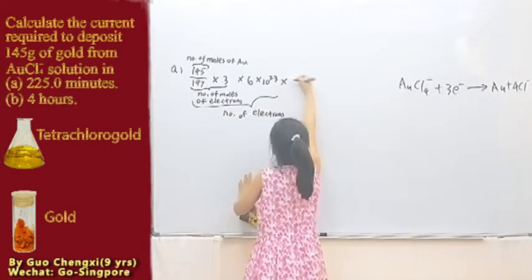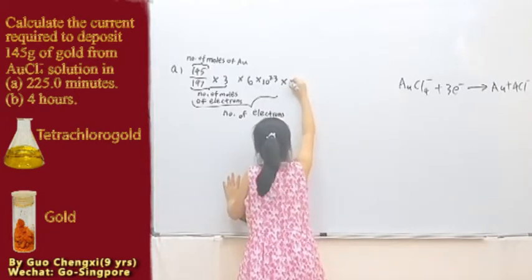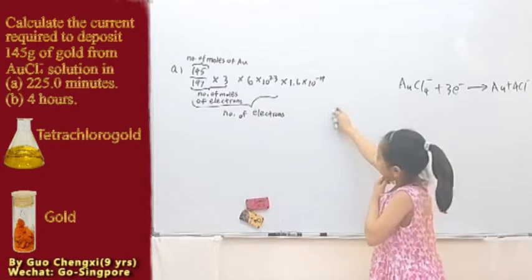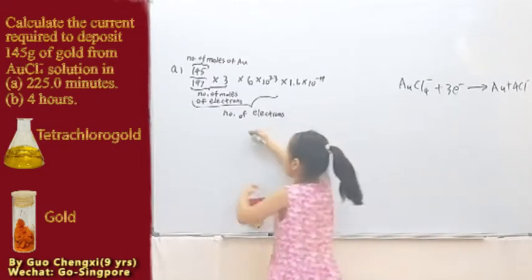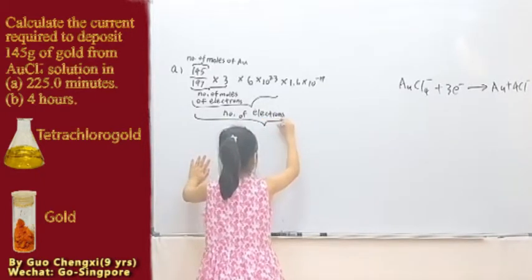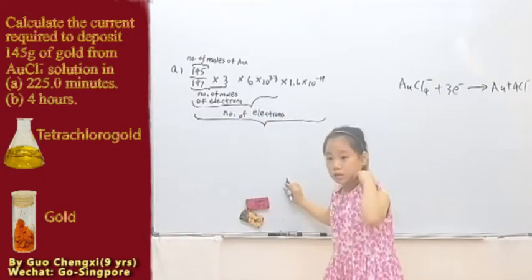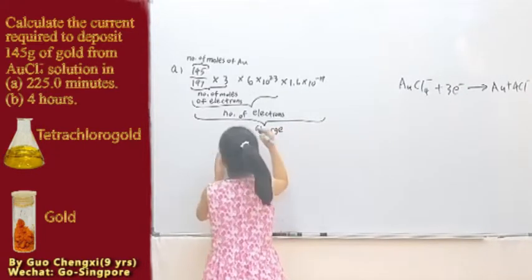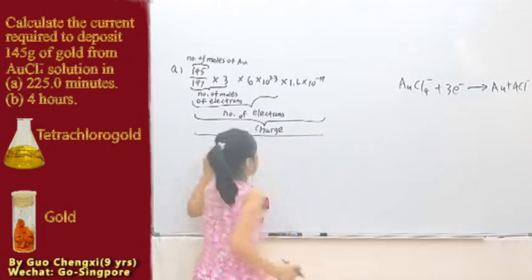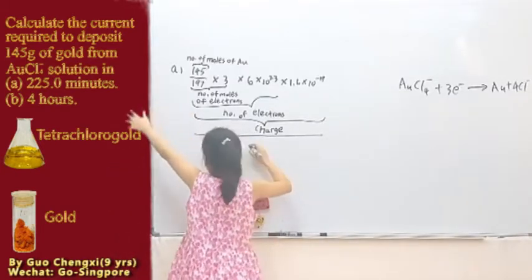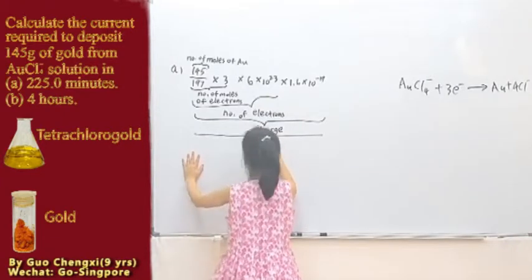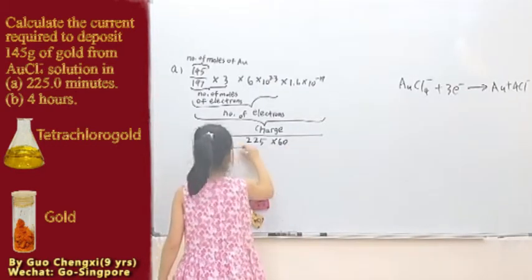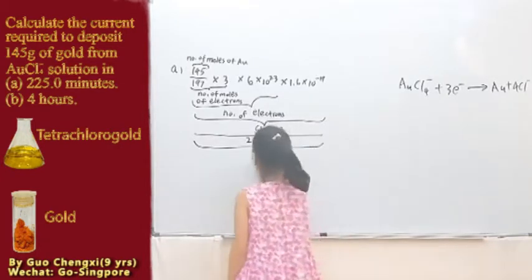Then it will times 1.6 times 10 to the power of negative 19. This part is actually the e, the charge. So this whole thing, what is it? It's the charge. Then the whole thing has to divide by the time, which is shown here, 225 minutes. But you use seconds, so times 60. This whole thing is the charge.